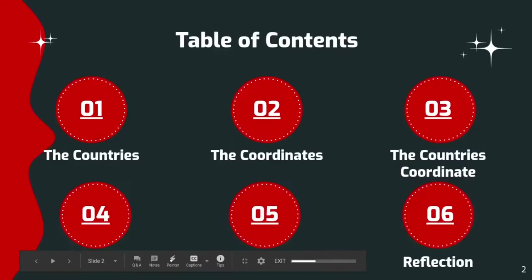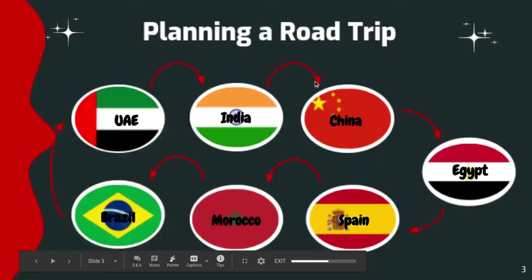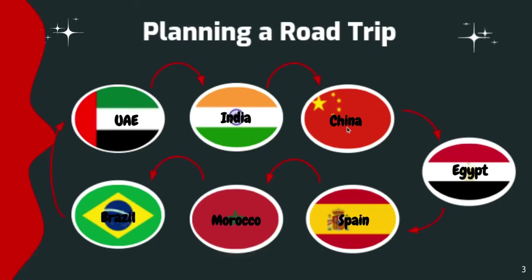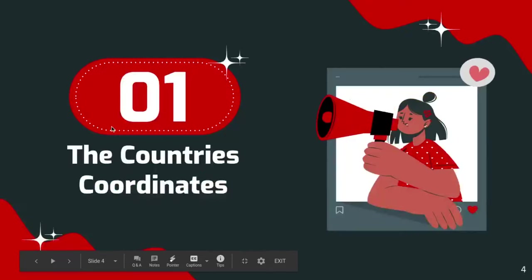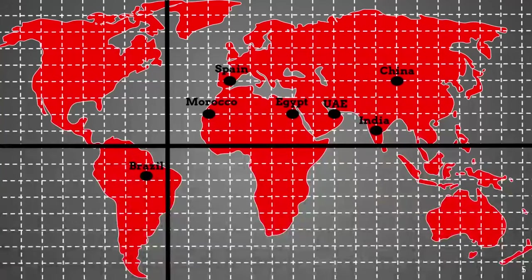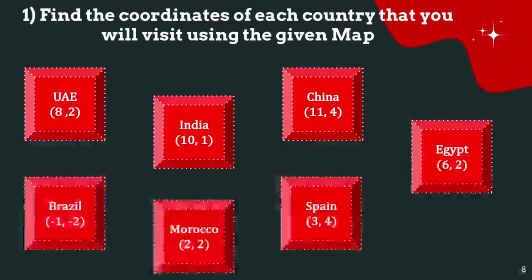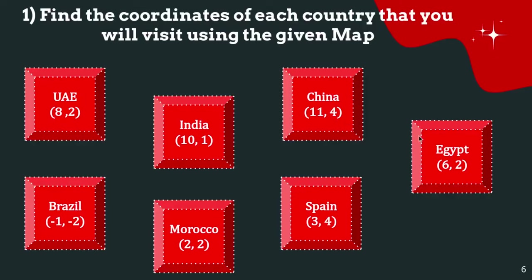Road trip project: planning a road trip with seven countries and seven stops, starting from the UAE. We go to India, then China, Egypt, Spain, Morocco, Brazil, and back to the UAE. Task one is the countries' coordinates. Using the given map, the coordinates are: UAE (8, 2), India (10, 1), China (11, 4), Egypt (6, 2), Spain (3, 4), Morocco (2, 2), and Brazil (-1, -2).